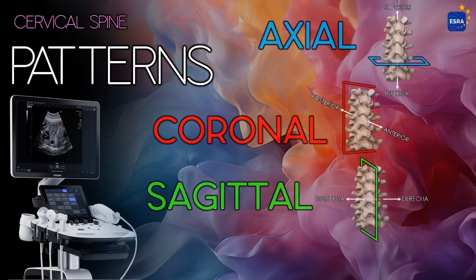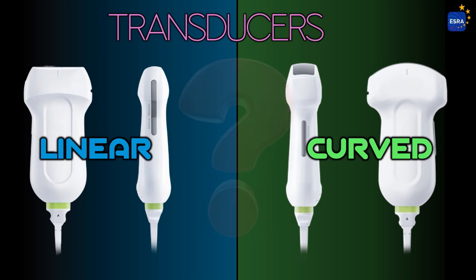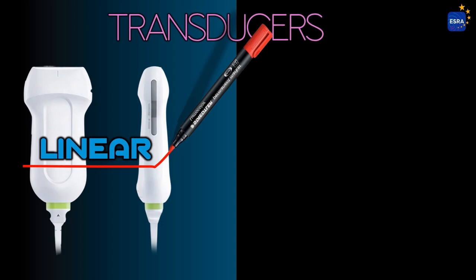The cervical region offers anatomical and accessibility advantages that allow imaging in all three planes: axial, sagittal, and coronal. This is due to the shallower depth of neural structures, reduced bony interference, and the mobility of the neck, which enables lateral positioning of the transducer. These factors create suitable acoustic windows, facilitating comprehensive assessment of the spinal canal, spinal cord, and nerve roots. The cervical region's superficial anatomy typically allows for the use of a high-frequency linear transducer, providing excellent spatial resolution for visualizing fine neural and musculoskeletal structures.